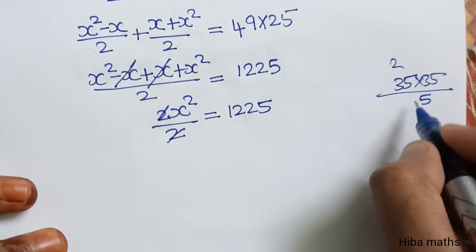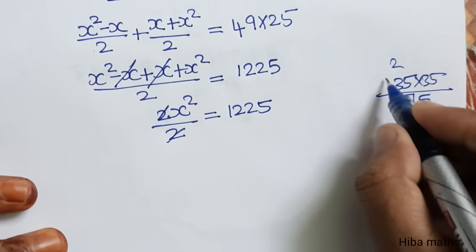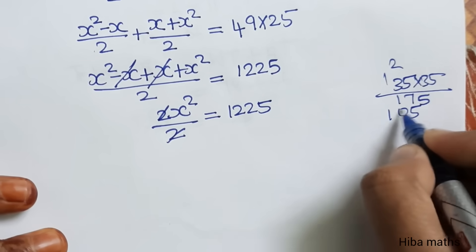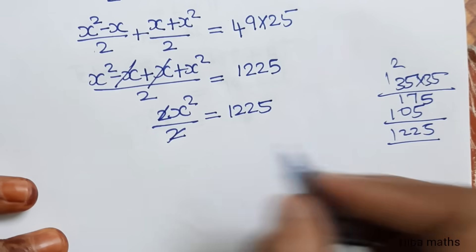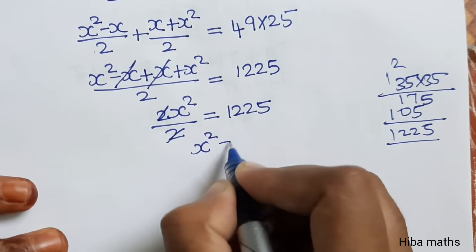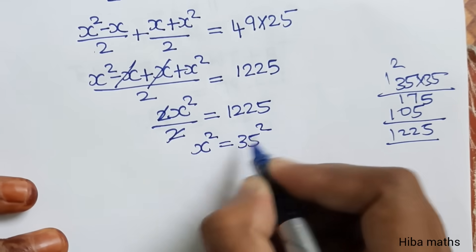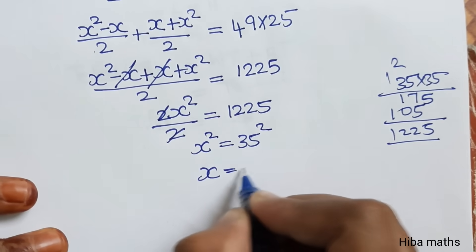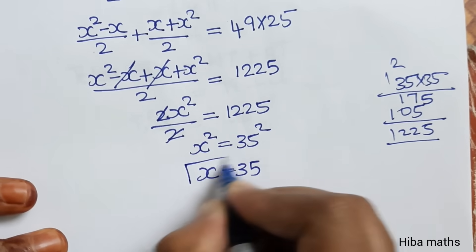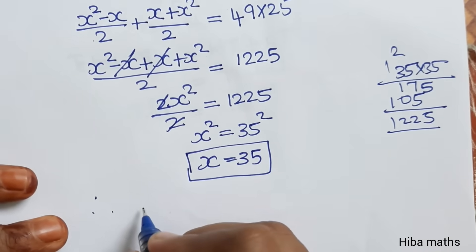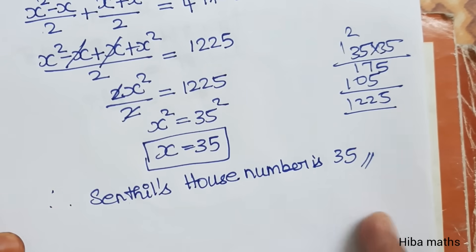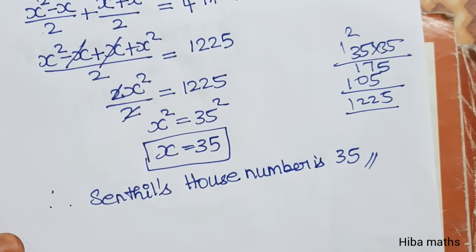x squared equals 1225, and the square root of 1225 is 35 times 35. So x equals 35. Therefore Sendhil's house number is 35.